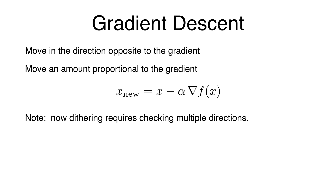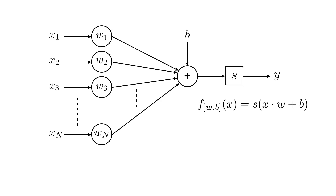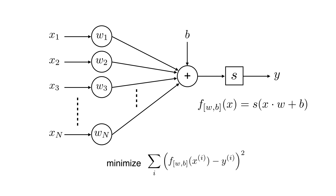Here's our neuron expression. The w and b are the parameters — the knobs we tune to get our neuron to do what we want. To do that, we need a function to minimize: the error. We take the output of the neuron, subtract the desired output, square those values, and sum that over all the data we have. Through the minimization of that error function, we can set the weights of our neuron.